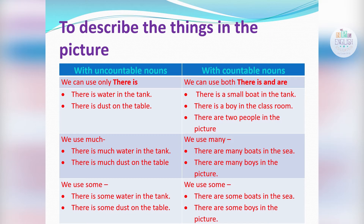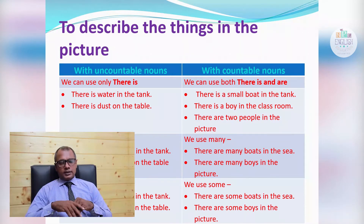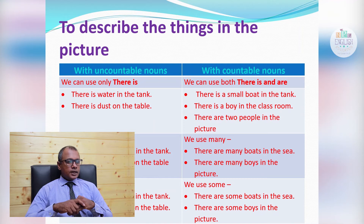We use 'some' with both countable and uncountable nouns. For example: 'There is some water in the tank', 'There is some dust on the table', 'There are some birds in the sea', 'There are some boys in the picture.'